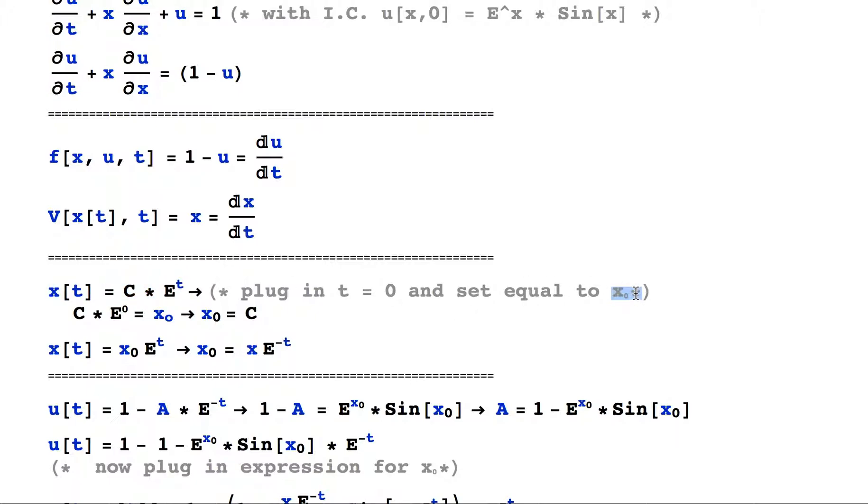And now if we plug in zero for time and set that equal to x_naught, which is by definition the position of x at time zero, then we see that C, the constant from integration, is directly equal to x_naught. So we go ahead and plug that in and we can see that x of t is equal to x_naught times the exponential of time. And then if we would just simply rearrange, we can solve for x_naught in terms of x.